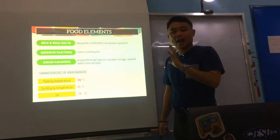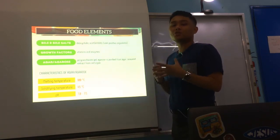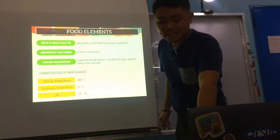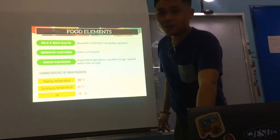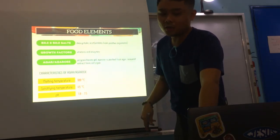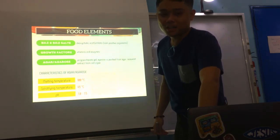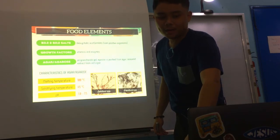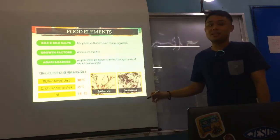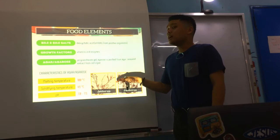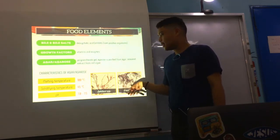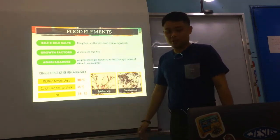Agarose or agar comes from the extract of red algae or seaweed, specifically from two species — Gelidium and Gracilaria species. Please take note of these two genera as the source of your agar or agarose.